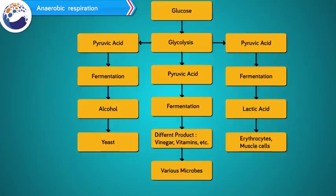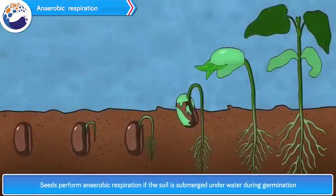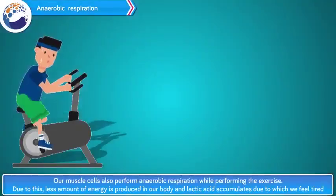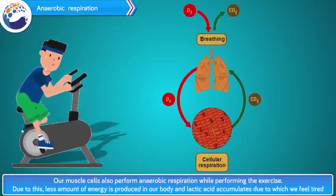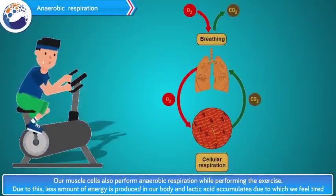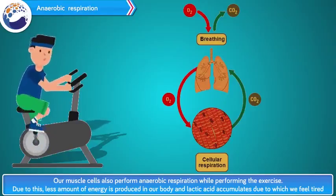This is called fermentation. Some higher plants, animals and aerobic microorganisms also perform anaerobic respiration instead of aerobic respiration if there is depletion in the oxygen level in the surroundings. For example, seeds perform anaerobic respiration if the soil is submerged under water during germination. Our muscle cells also perform anaerobic respiration while exercising. Due to this, less energy is produced and lactic acid accumulates, due to which we feel tired.